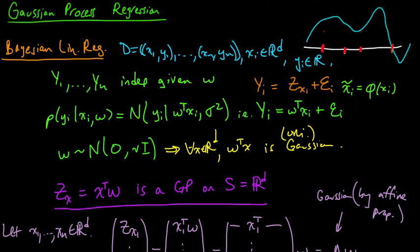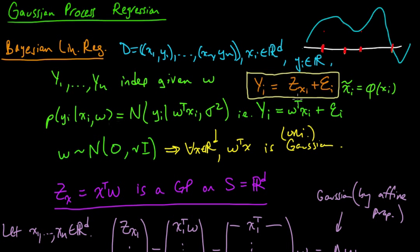Up here, we sort of informally defined a Gaussian process regression model with this equation, where we said we're going to put some distribution on these y's by taking a Gaussian process at these x's and then adding some independent Gaussian noise epsilon. Whenever we're doing regression, the thing that we're usually interested in is the posterior predictive distribution on some of the y's given the values of some of the others.